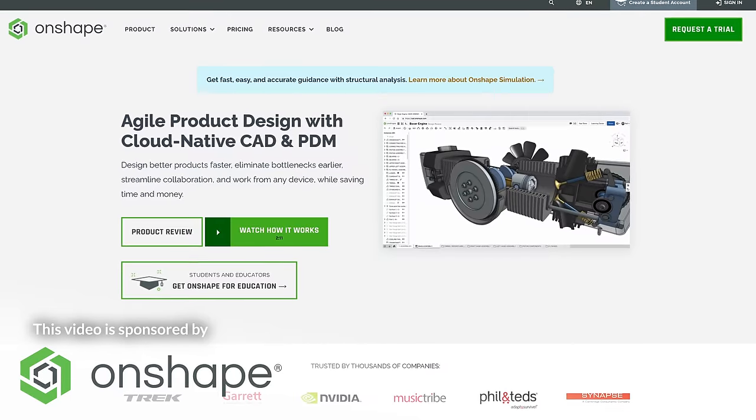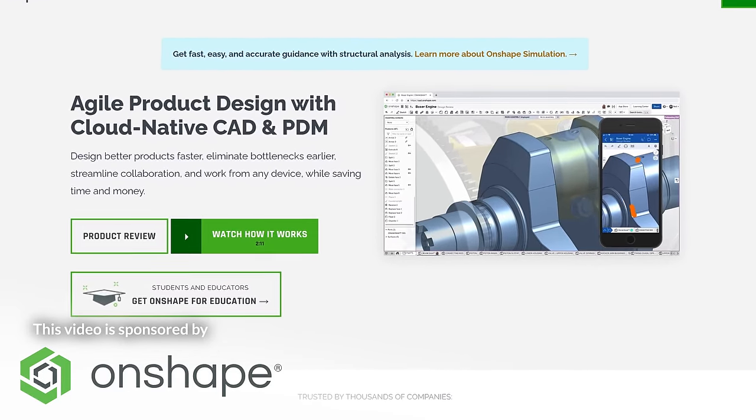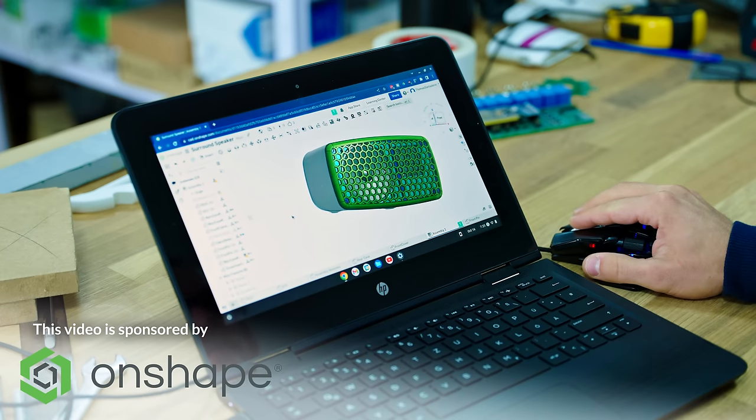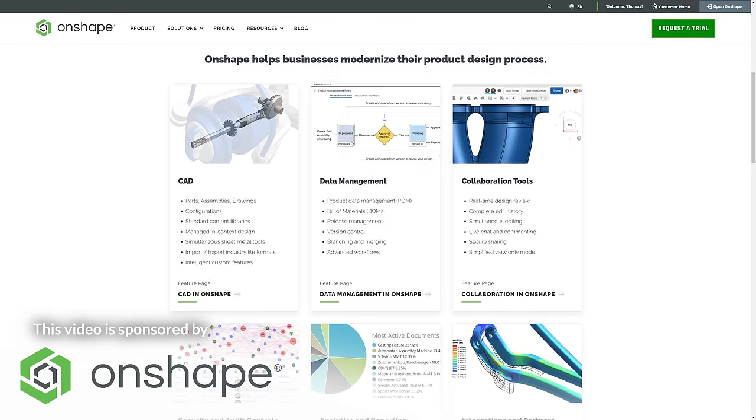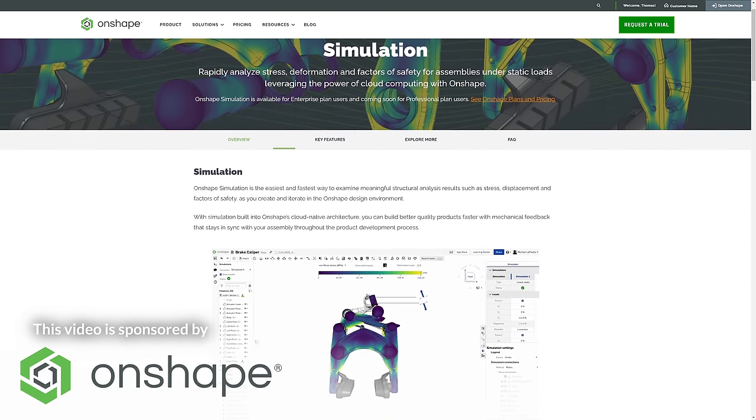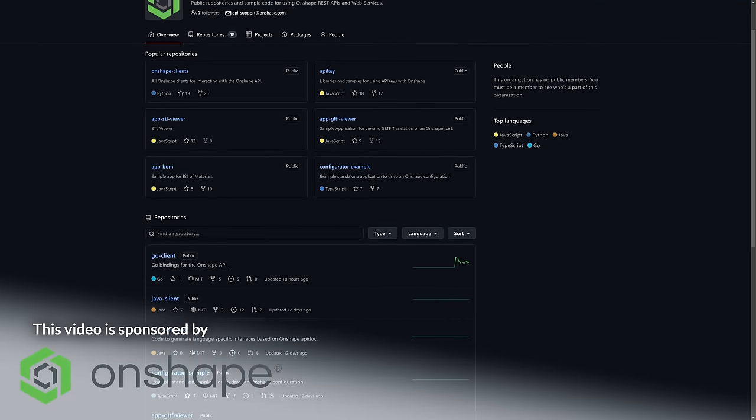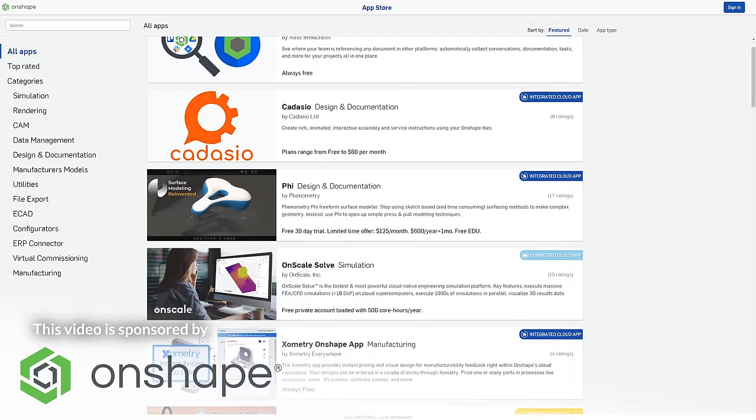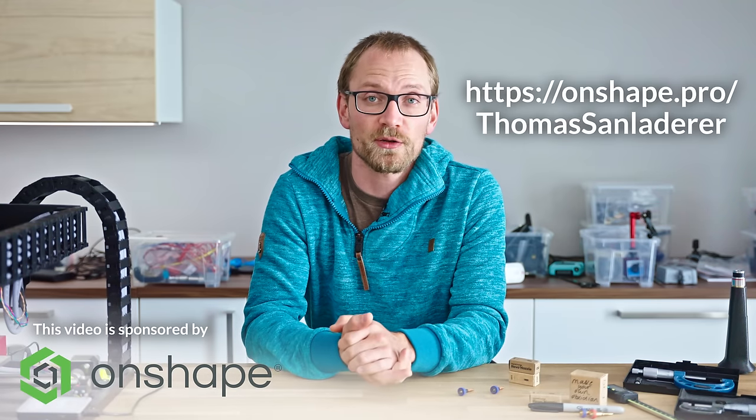Onshape is a fully-featured CAD and PDM platform designed for business but free for makers. Onshape is entirely cloud-based so there's nothing to install, and it has real-time sharing and collaboration built right in. Of course, you get a fully-featured CAD workspace and the new FEA features, but you can also extend them with your own tools in their FeatureScript programming language, or add extra functionality with one of the menu. Start exploring Onshape for your personal or professional projects at Onshape.pro slash Tomas Samadra.